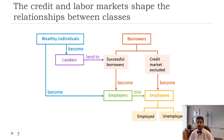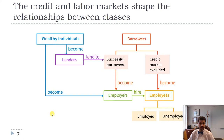The two most important markets when talking about inequality are the labor market and the credit market. Because we start at different positions, that often influences where we end up. Everybody can move up and down the income distribution — people born poor can become owners of successful firms. But there's a lot of benefit to starting out wealthy. Wealthy individuals, shown in blue, can become both lenders and employers because they have the assets to start firms or lend money.